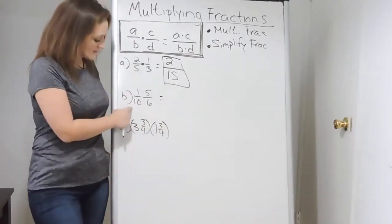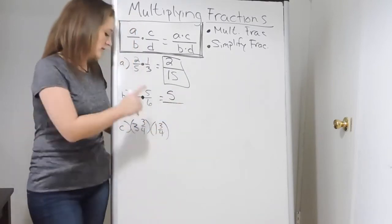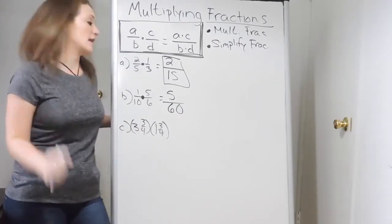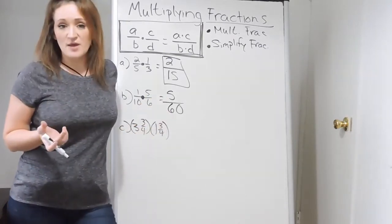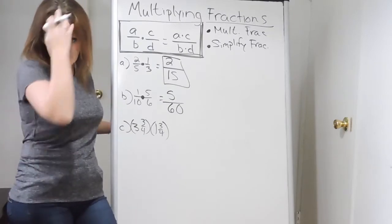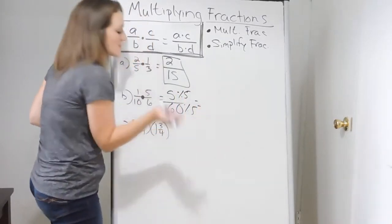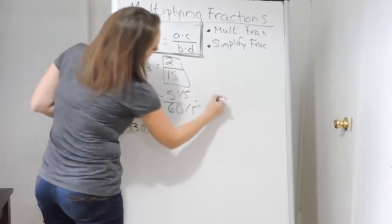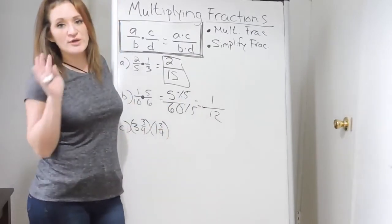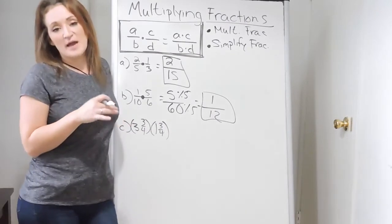Example B is 1 over 10 times 5 over 6. Multiply straight across: 1 times 5 is 5, over 10 times 6 is 60. Now check — can this fraction be simplified? Looking at 5 and 60, they do have something in common. Remember, if a number ends in 0 or 5, it is divisible by 5. So divide out a 5 from both numerator and denominator: 5 divided by 5 is 1, and 60 divided by 5 is 12. Check that 1 and 12 have nothing in common — so our final answer is 1 over 12.